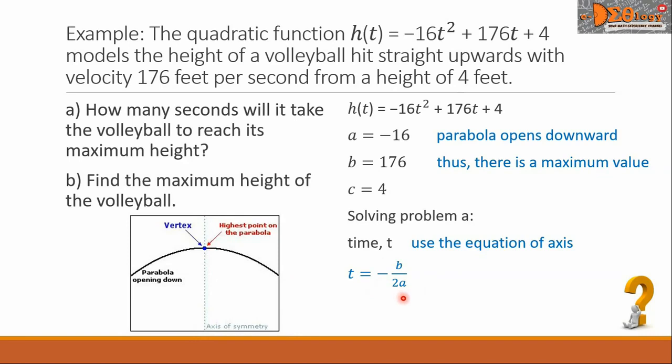Substituting the values, we have the negative of b which is 176 all over the constant 2 multiplied by a. And our a is -16.